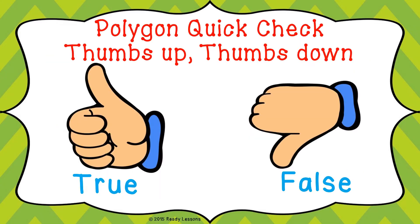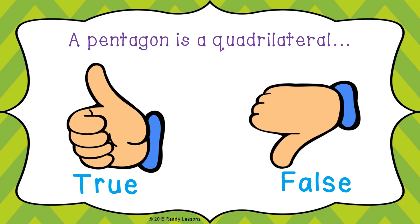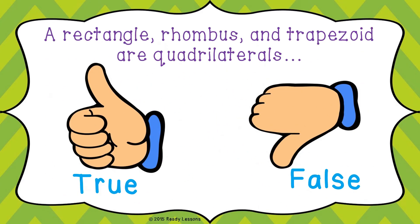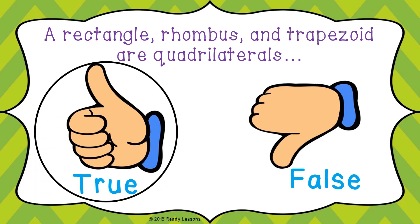Let's have an activity. Choose true if the statement is correct and false if the statement is wrong. First: a pentagon is a quadrilateral. The answer is false. Second: a rectangle, rhombus, and trapezoid are quadrilaterals. The answer is true.